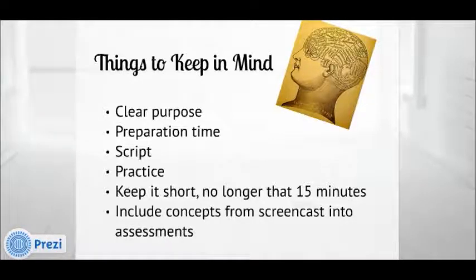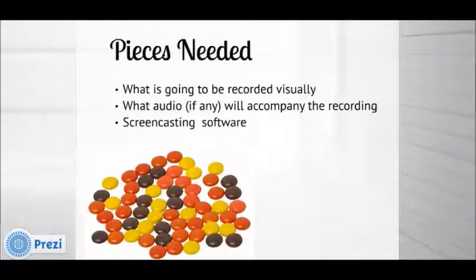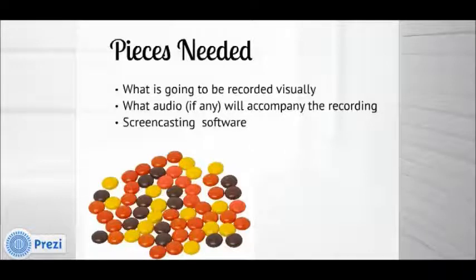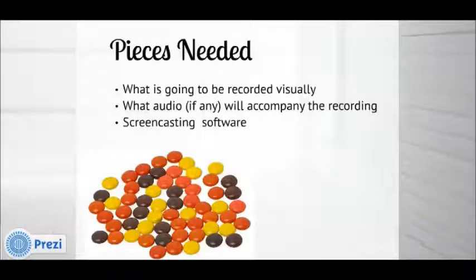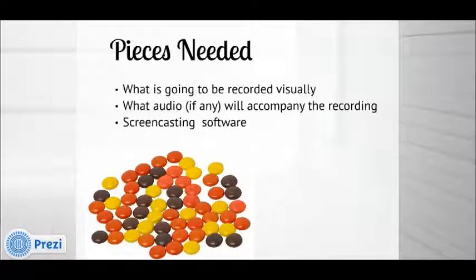It is a good idea to use material from screencasts in assessment for that week, whether it's formal or informal. Basically, each screencast will include three main pieces: first, content to be recorded visually; second, audio or narration — and if you are doing the narration, please have a script; and third, the screencasting software. There are many on the market today to choose from. Many commercial software packages have a 30-day trial, like Camtasia and Captivate. Many will have free or pro paid accounts, like Jing and Screencast-O-Matic. All will have benefits and drawbacks.